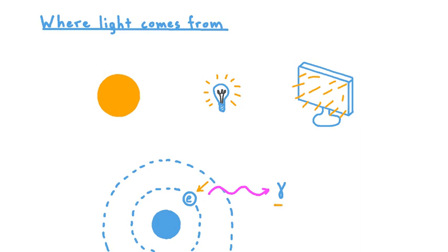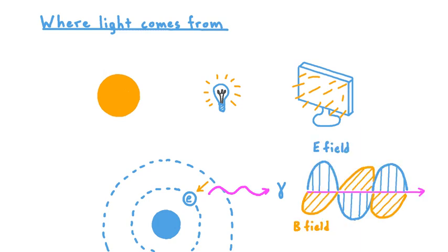If we were to take a closer look at a photon emitted in a process like this, we would see that this packet of light, this photon, is actually a series of oscillating fields—a magnetic field and an electric field. Speaking of those fields, sometimes we abbreviate electric with a capital E and magnetic with a capital B.